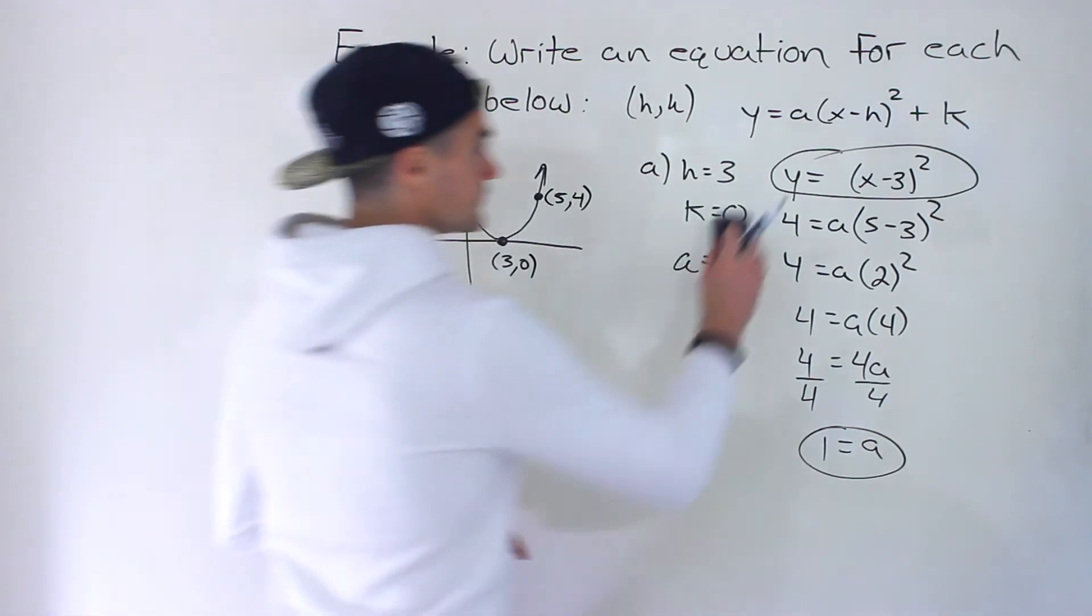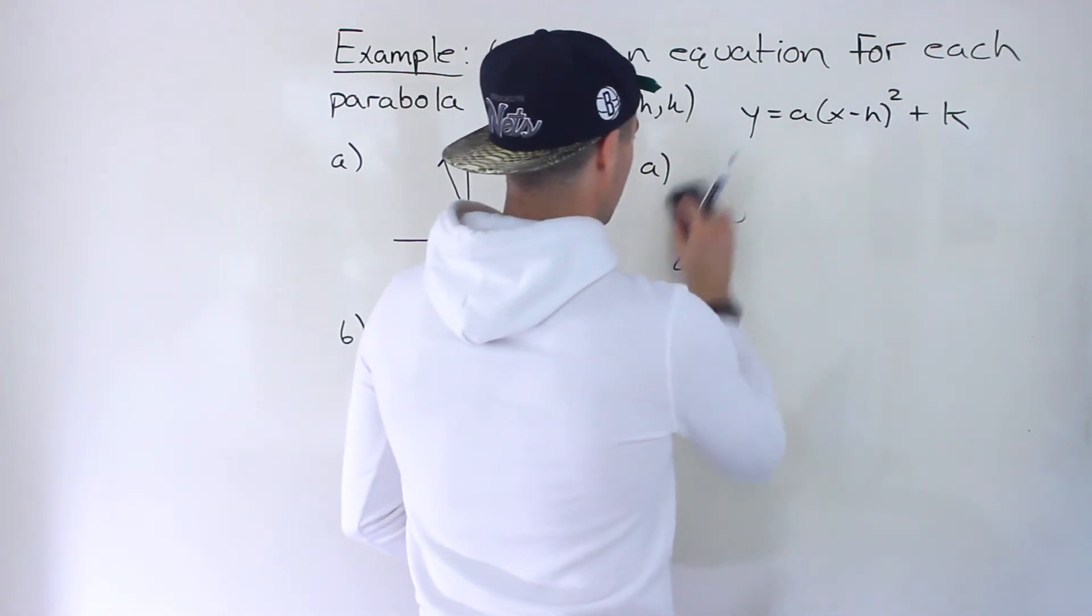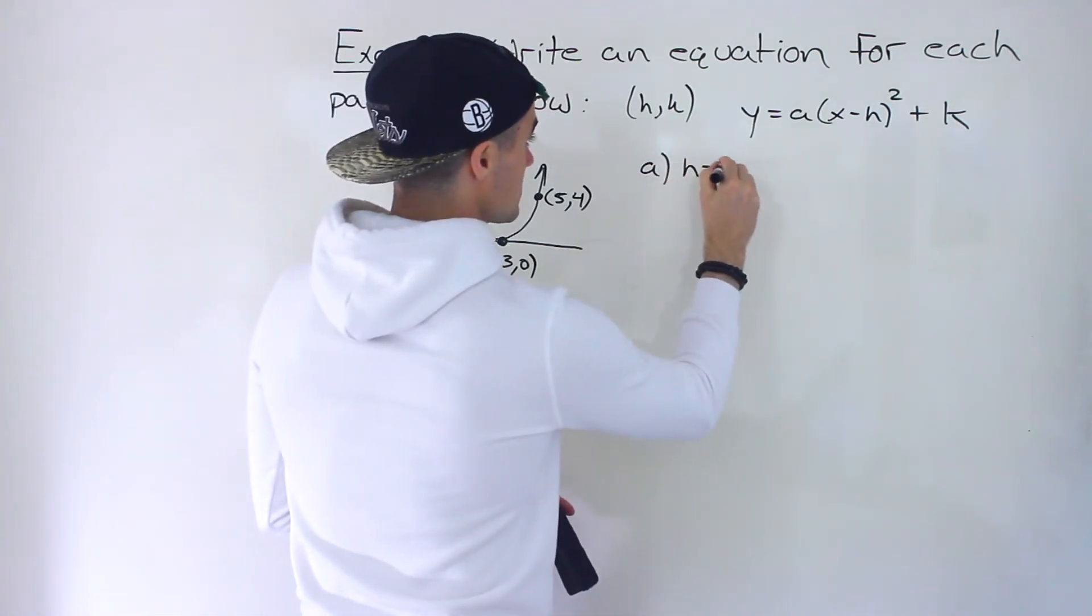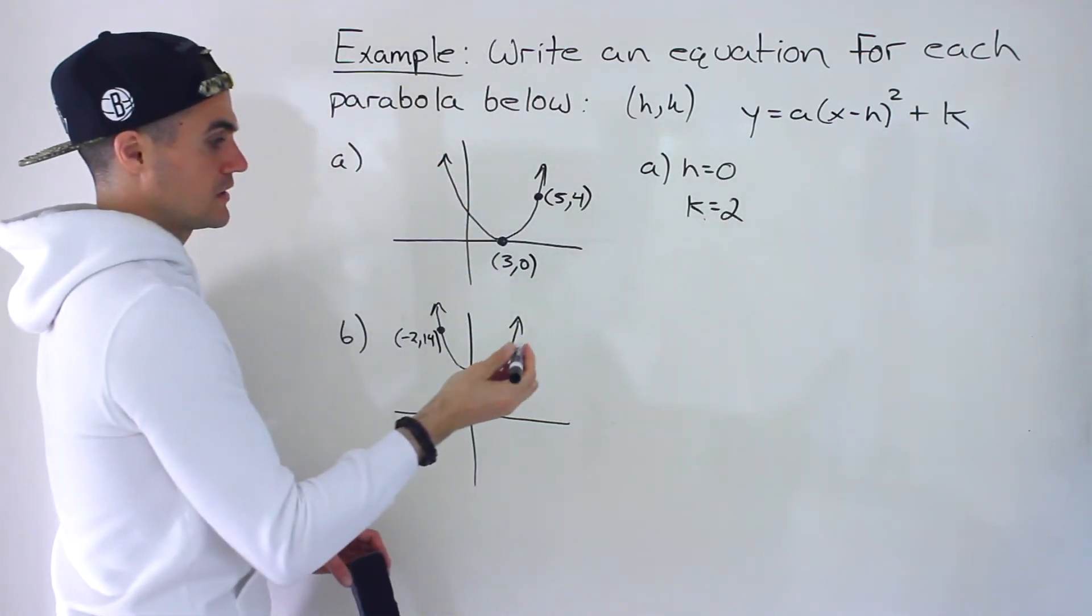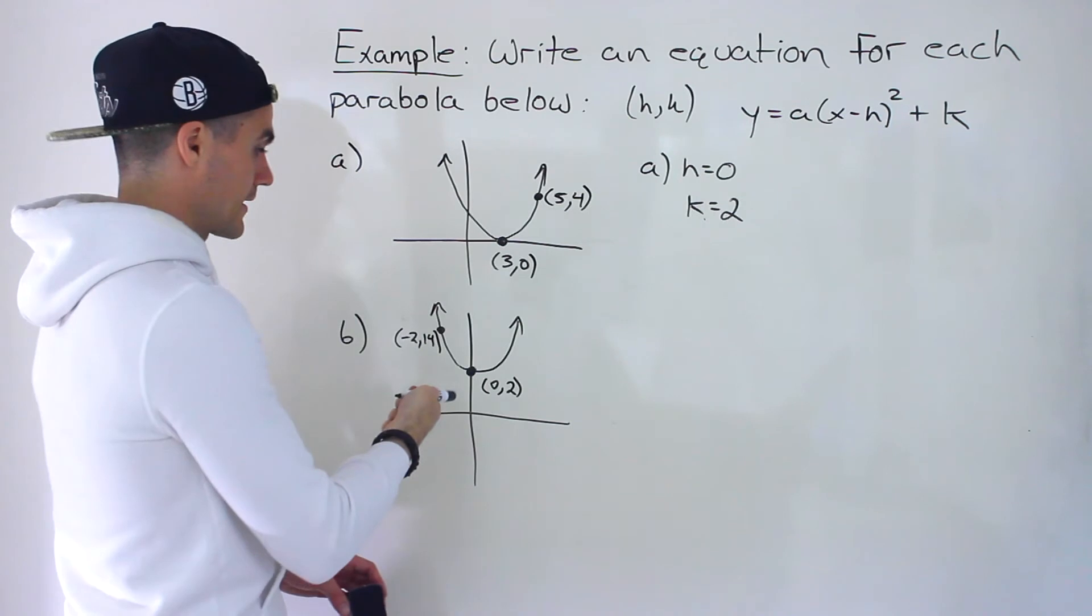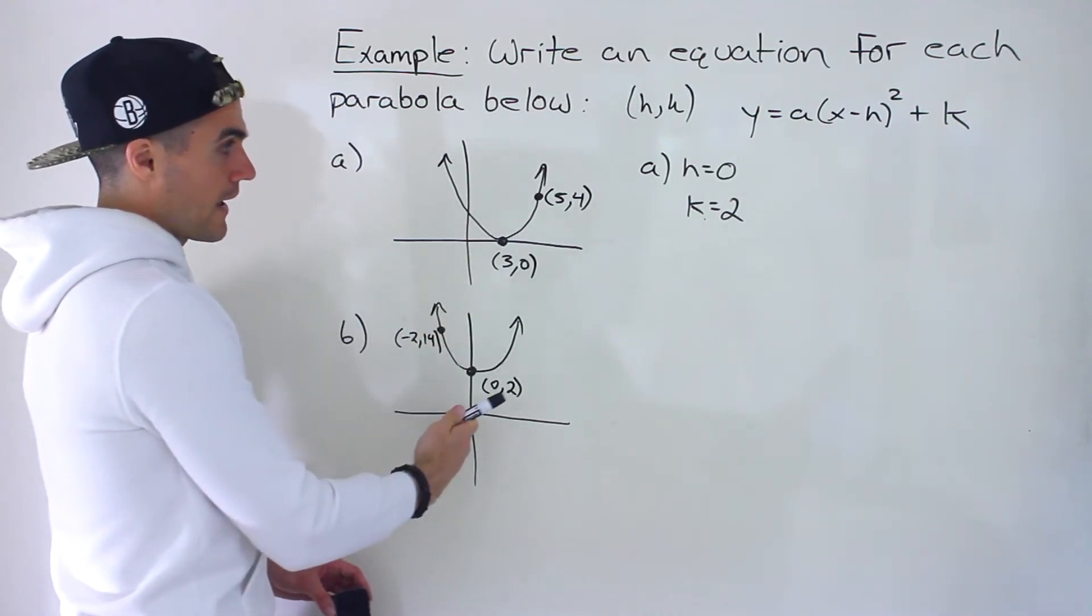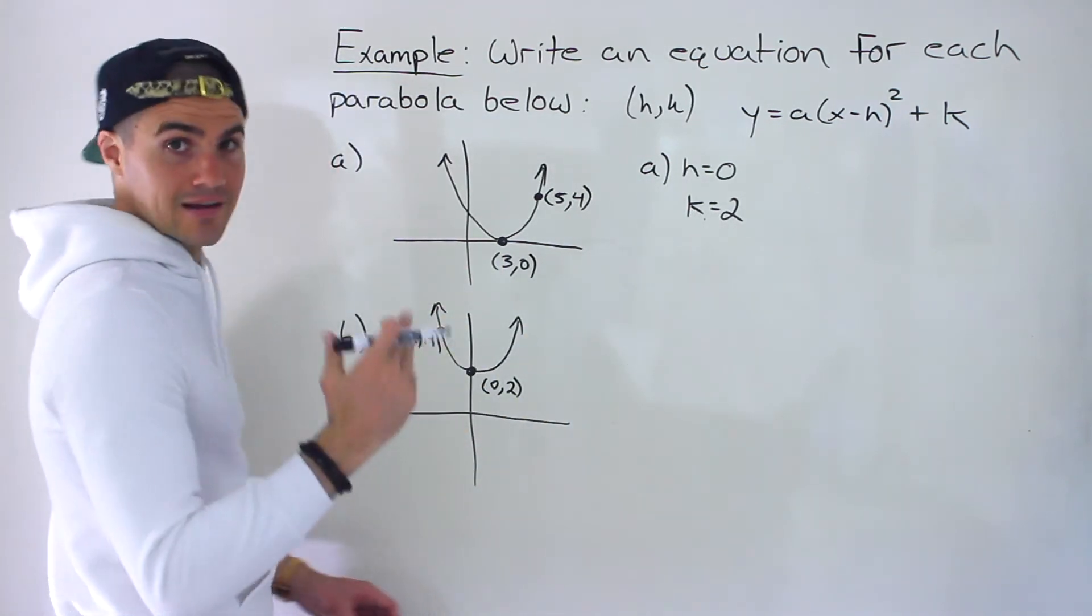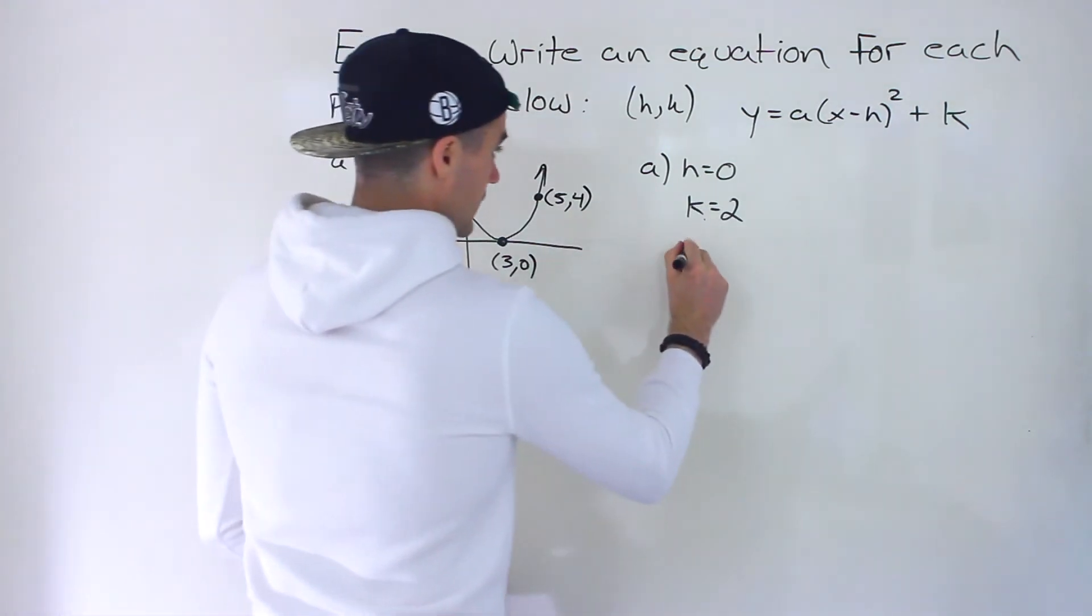Now, what about part B? Part B, again, we're given a vertex, 0 and 2. So automatically, H is 0, K is 2. In this case, the vertex is actually on the Y axis. It's the Y intercept. Whenever the vertex is on the Y axis, the H value is always going to be 0. That X is going to be 0. That axis of symmetry is going to be 0. So now, all that's left to find is the A value.